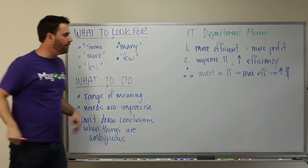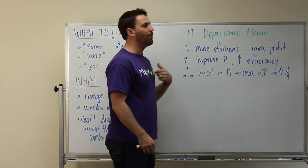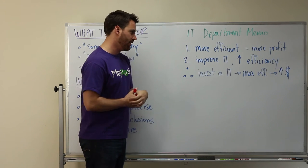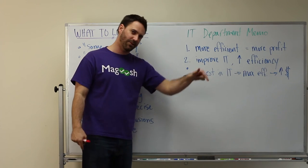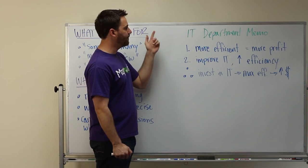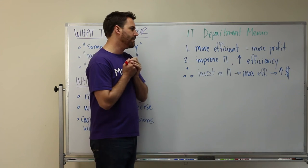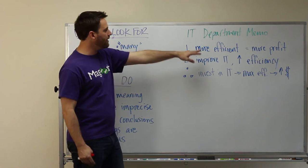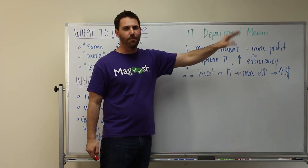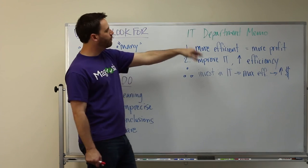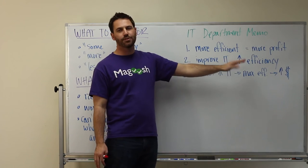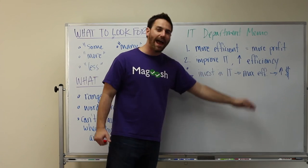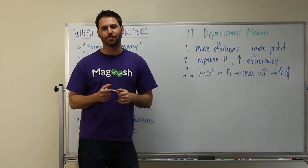Let's take a look at an example. This is an example argument that came from the PDF that you can download from MBA.com. I'll have a link down below so you can go there and read it. It's a memo from an IT department and in the argument they say that if you make people more efficient you're going to have more profit.